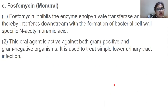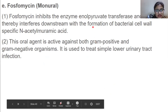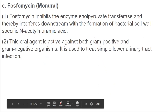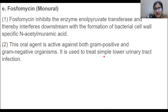Fosfomycin inhibits the enzyme enolpyruvate transferase, thereby interfering with the formation of N-acetylmuramic acid, a specific building block of the bacterial cell wall. This oral agent is active against both gram-positive and gram-negative organisms and is used to treat lower urinary tract infections.